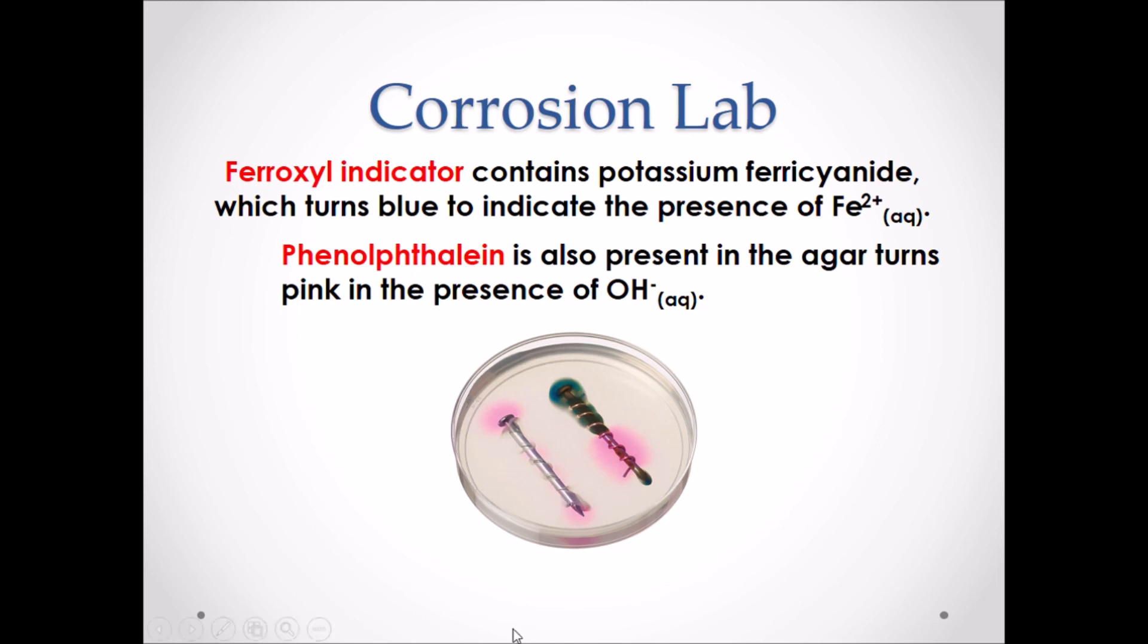If we look at the second nail, we can see two colors, pink and blue. Again, pink tells us that OH- is present. Therefore, corrosion is happening. But we are also seeing blue, which tells us that there is the presence of Fe2+. Therefore, that tells us that iron is corroding. And the metal that is wrapped around iron is not protecting it.